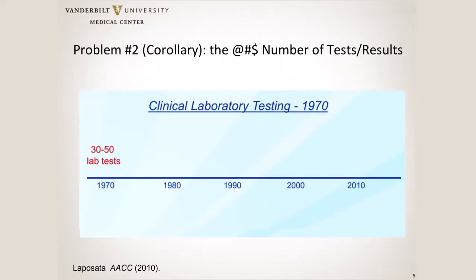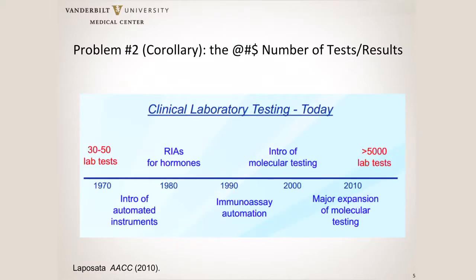The corollary to this is simply the sheer number of tests and results available out there. Clinical laboratory testing in the 1970s really comprised about 30 to 50 tests, and they were all pretty much chemistry tests. By 2010, there were over 5,000 different lab tests. Now in 2014 there's next-gen sequencing, so you can multiply that by the genome pretty much.